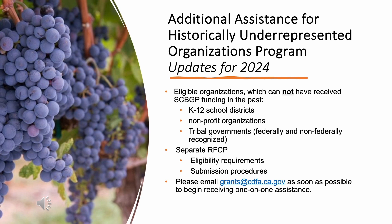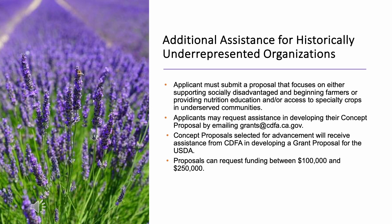Most importantly, we would like to emphasize that applicants to the Additional Assistance Program are eligible to receive one-on-one technical assistance during the concept proposal process and beyond. We highly encourage you to email grants at cdfa.ca.gov as soon as possible to begin receiving this assistance in the form of email, phone call, office hours, or video call. Today we will provide a brief overview of the program in this webinar, and there will be a separate presentation for the Additional Assistance Program. We recommend attending that webinar for those considering applying. Concept proposals selected for advancement in this program will receive assistance from CDFA in developing a full proposal for submission to the USDA. Proposals can request between $100,000 and $250,000 in funding. For more information, please refer to the separate Additional Assistance Program RFCP or attend one of the Additional Assistance Program webinars.